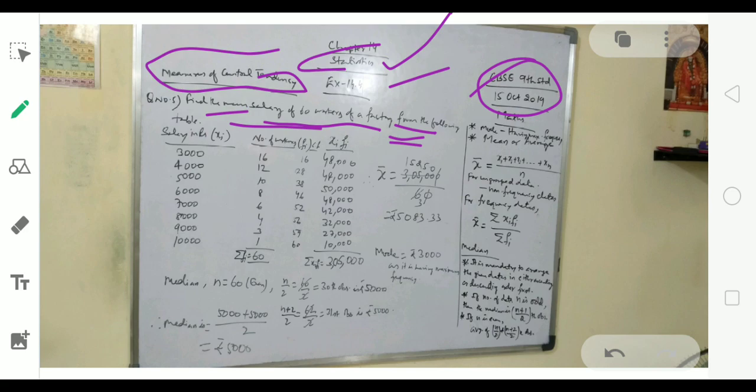Here we are given salary, that is XI, and number of workers, that is FI. We need to utilize the formula Sigma XI FI divided by Sigma FI. We have to apply that particular formula.